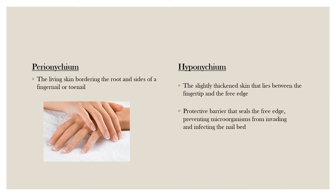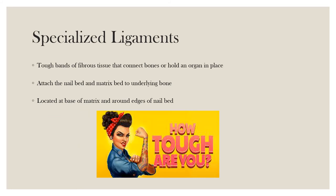The perionychium is the living skin bordering the root and sides of the fingernail and toenail. The hyponychium is slightly thickened skin that lies between the fingertip and the free edge. It is also a protective barrier that seals the free edge, preventing microorganisms from invading and infecting the nail bed.